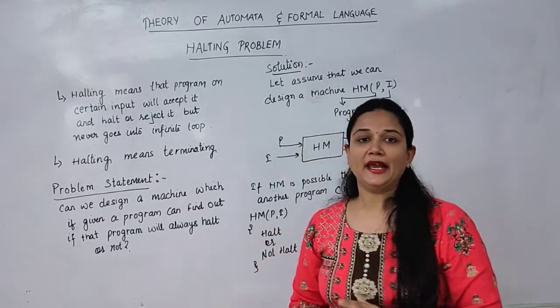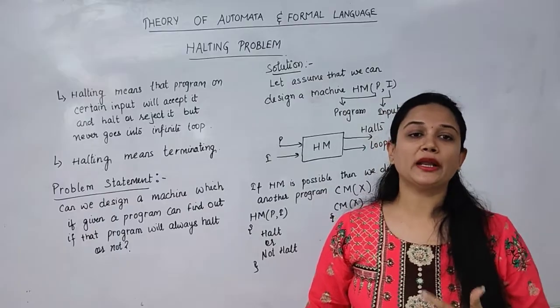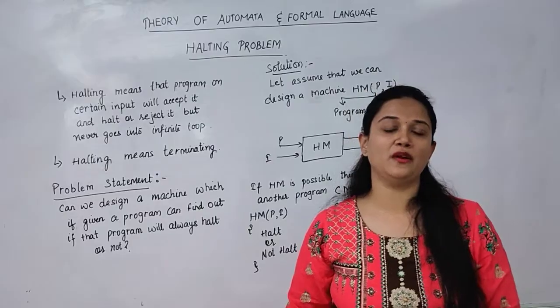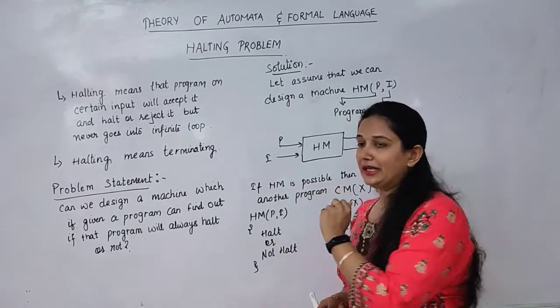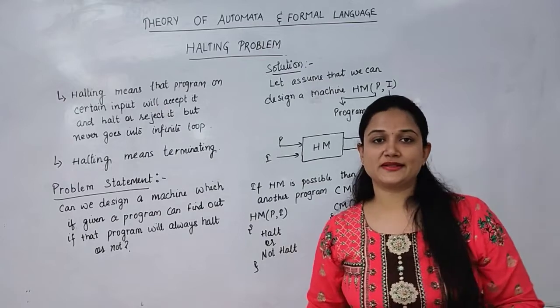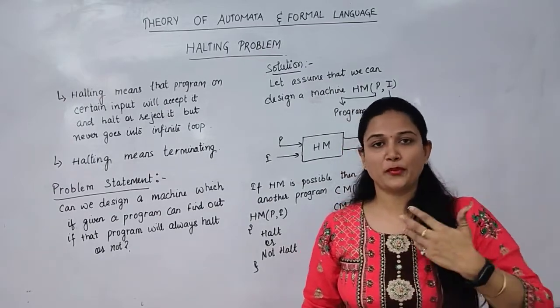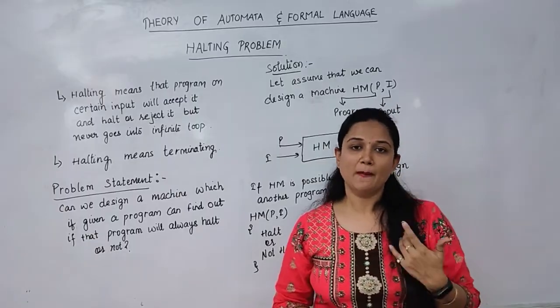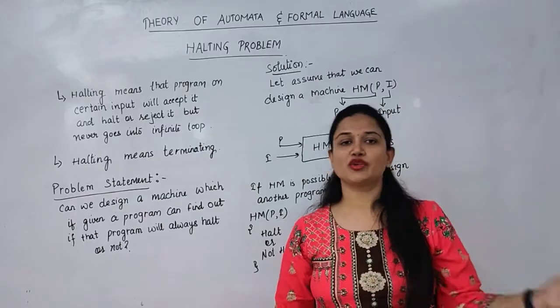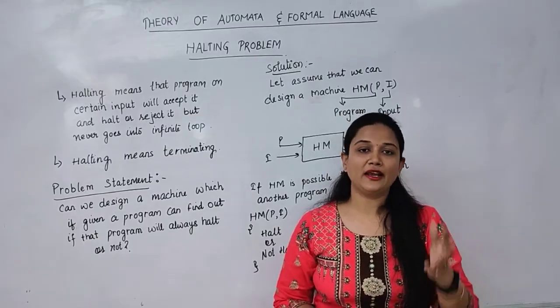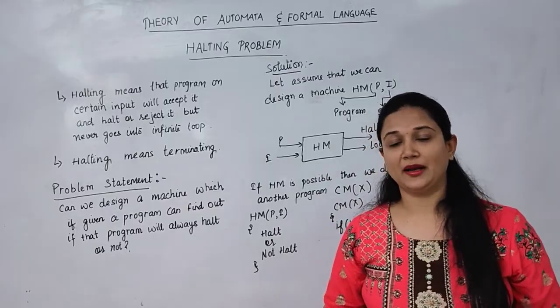This is the halting problem. This statement is called the halting problem, which is one of the famous problems in theory of computation. Now if we see here, this problem statement, how is this a problem for us? Because practically how will we prove this? We know that yes, we cannot make any software that validates or verifies another software that it will work properly for every scenario or every input. Okay?